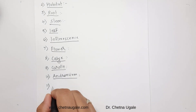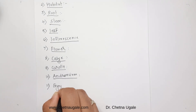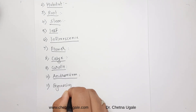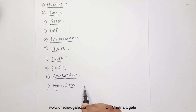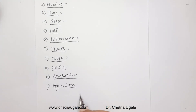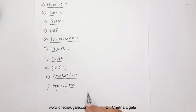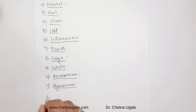The next essential floral whorl is the gynoecium. For the gynoecium, we mention the number of carpels, then cohesion — whether it is apocarpous or syncarpous — then adhesion if present, the ovary position whether superior or inferior, and the type of placentation.